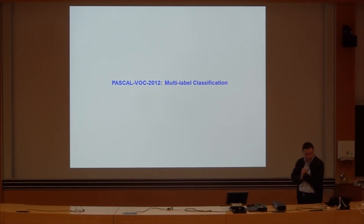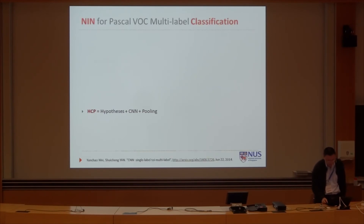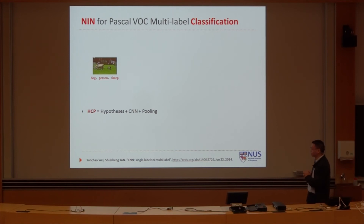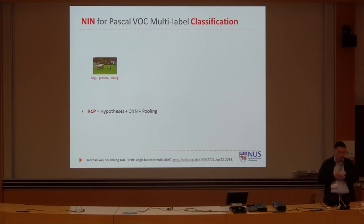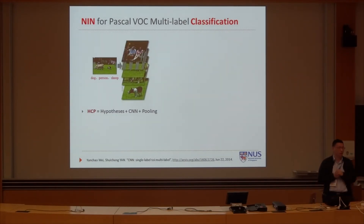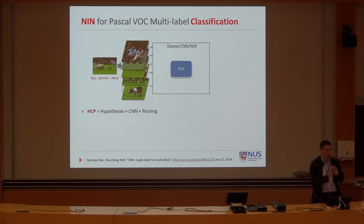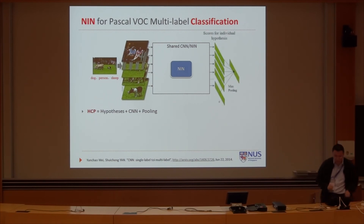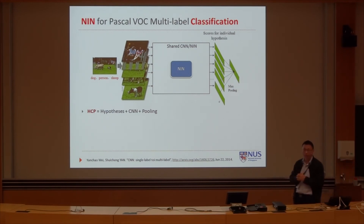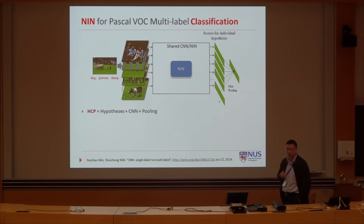We also explored the Network in Network for Pascal VOC 2012 multi-label image classification. We proposed a pipeline called HCP — Hypothesis and CNN plus Pooling. For each image, we actually generate a set of hypotheses. We only use a chain, and for each one we run a Network in Network. Then for each hypothesis, we get the output for different classes. Then we do cross-hypothesis pooling to get the final result. Although this is multi-label classification, to some extent you are exploring single-label image classification. We do not need ground-truth bounding boxes.